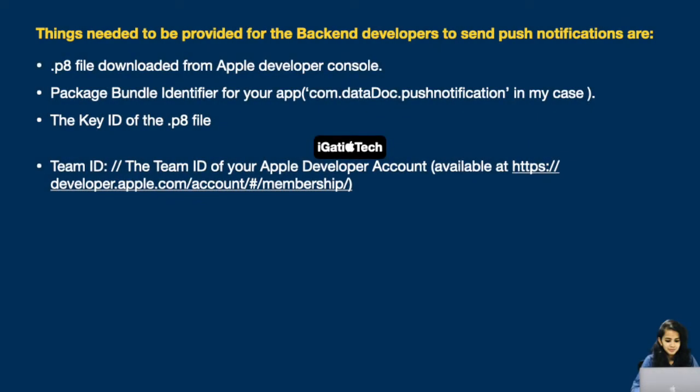Things needed to be provided to backend developers to send push notifications are: the P8 file downloaded from Apple Developer Console, the bundle identifier of your app (like com.datadoc.pushnotification), the key ID of the P8 file, and the team ID of your Apple Developer account, which is available at the mentioned website.